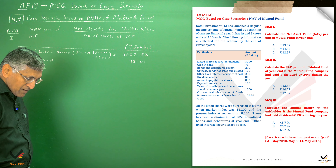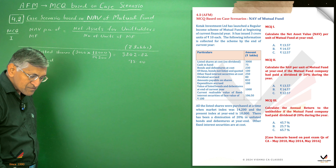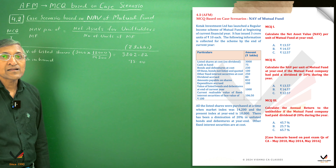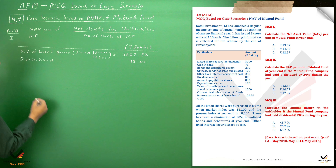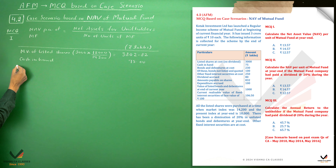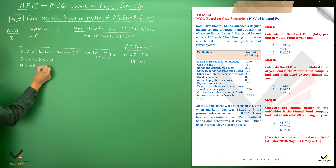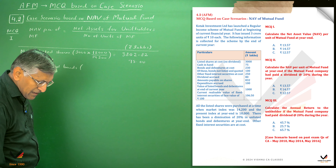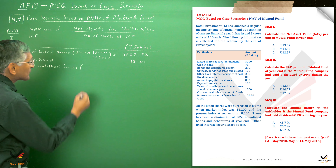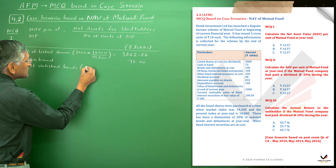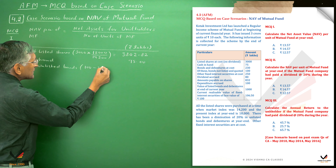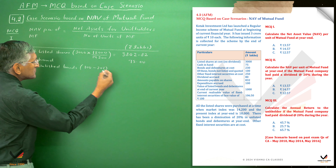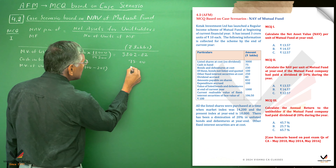We apply a diminution of 20% to the unlisted bonds. So the market value of unlisted bonds = 100 minus 20 = 80 lakhs.